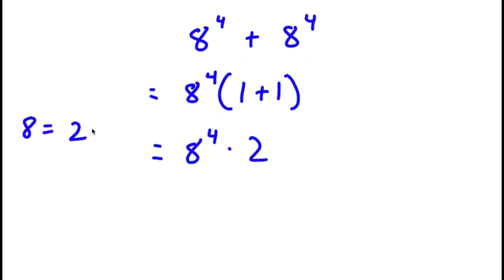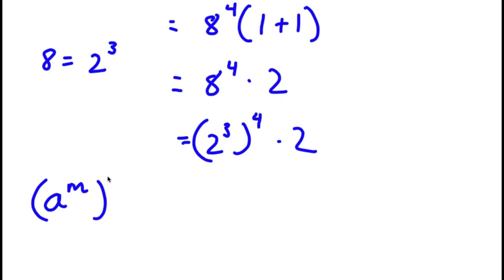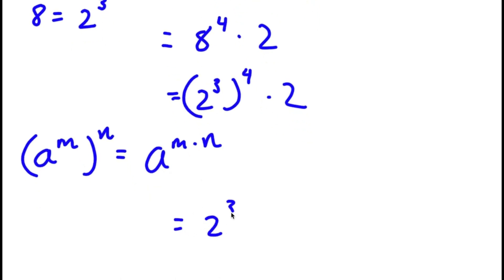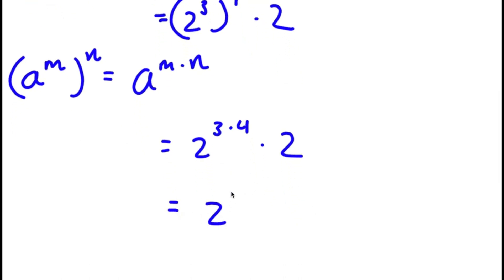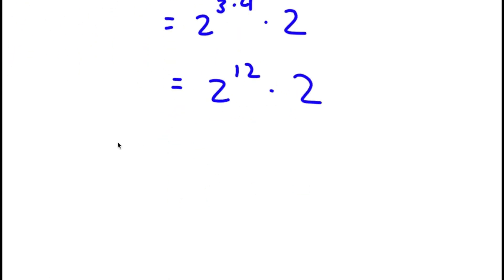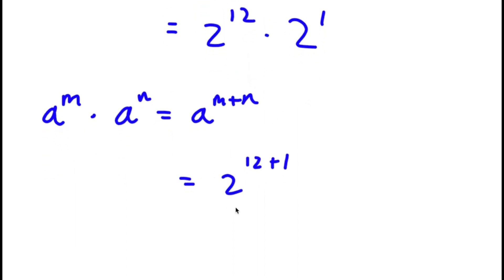Now 8 is the same thing as 2 to the power of 3. So replacing 8 with 2 to the power of 3, I get 2 to the power of 3 to the power of 4 times 2. If I have a to the power of m to the power of n, this equals a to the power of m times n. So 2 to the power of 3 to the power of 4 equals 2 to the power of 3 times 4, which is 2 to the power of 12. Now if I have a to the power of m times a to the power of n, this equals a to the power of m plus n. So 2 is the same as 2 to the power of 1, giving me 2 to the power of 12 times 2 to the power of 1, which equals 2 to the power of 13.